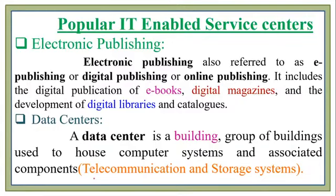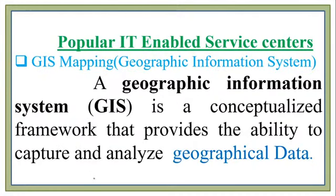GIS mapping is also called a geographic information system. A geographic information system is a conceptualized framework that provides the ability to capture and analyze geographical data. If you have geographical data, you can capture it and analyze it using GIS mapping. For example, in mobile devices, GIS is used to find a particular location.